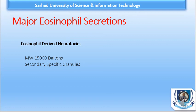Eosinophil-Derived Neurotoxin damages the myelin sheath of neurons. That's all about the eosinophilic secretions. In the next lecture, we will discuss basophils — the structure and function of basophil. Keep watching. See you next time.